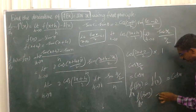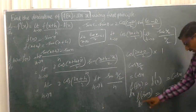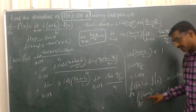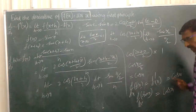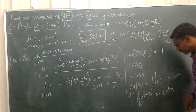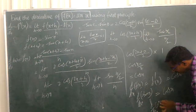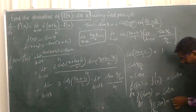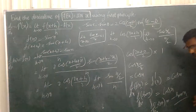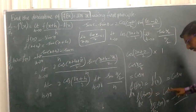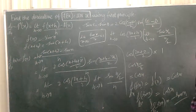So d/dx of sin(x) is always equal to cos(x). And d/dx of cos(x) equals minus sin(x). In summary: sin(x) differentiates to cos(x), and cos(x) differentiates to minus sin(x).